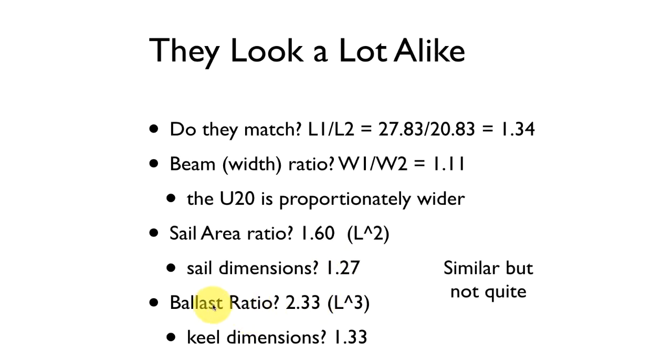The ballast ratio? The Antrim 27 has about 2.33 times as much ballast, as much keel weight, as the Ultimate 20. The Ultimate 20 is a much lighter boat. Does that scale? We'd expect it to scale as the length cubed. If we just made everything bigger, then the volume of that keel, that piece of lead, is going to be about 1.3 × 1.3 × 1.3.